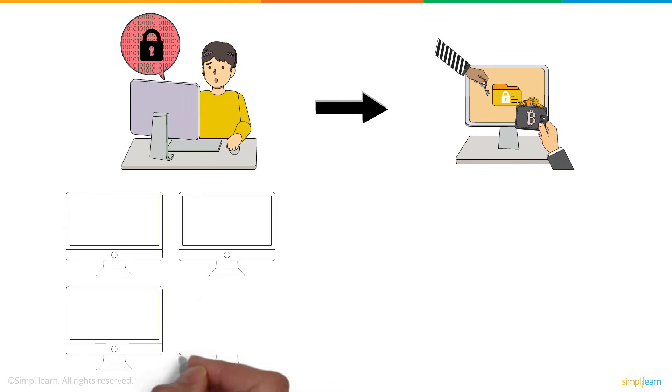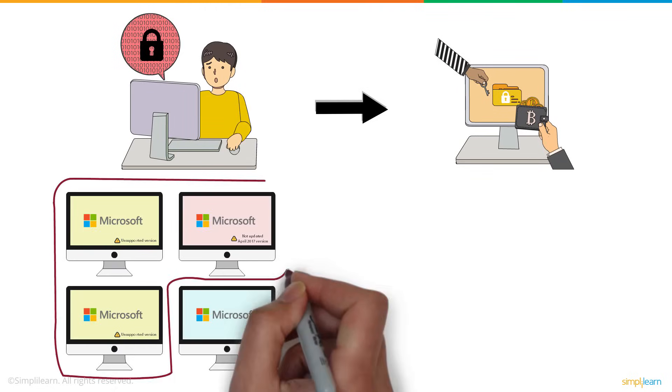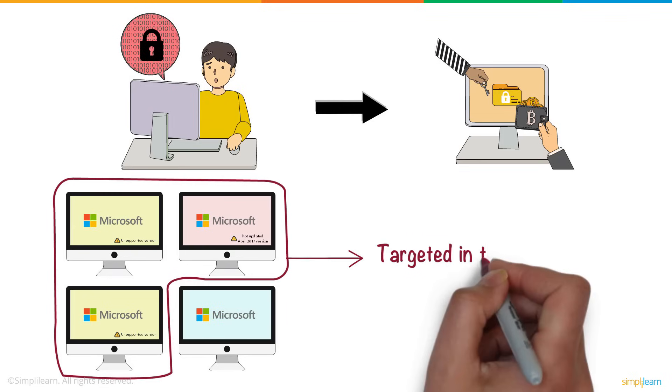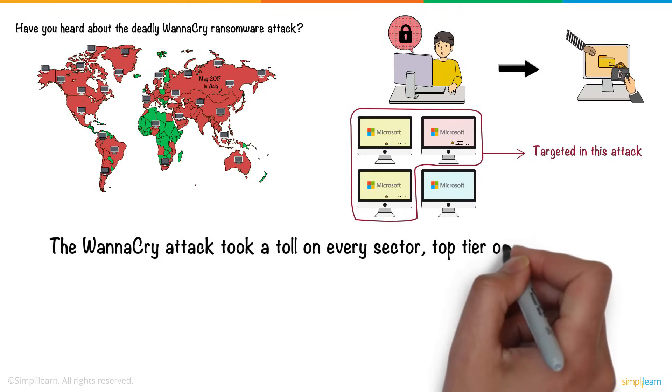The users who used the unsupported version of Microsoft Windows and those who hadn't installed the security update of April 2017 were targeted in this attack. The WannaCry attack took a toll on every sector.